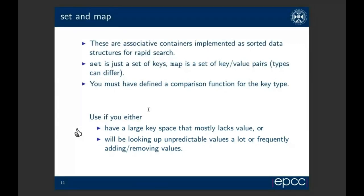For set and map, these are associative containers implemented as a sorted data structure that is very fast to search. Set is keys only; map is a set of key-value pairs, a bit like a Python dictionary but maintained in sorted order rather than using a hash table. The key and value can be of different types — for example, keyed by a string with the value being some complex object. You have to be able to define a comparison function for the key type, and use these when you have a large but sparse key space or are frequently looking up unpredictable values.